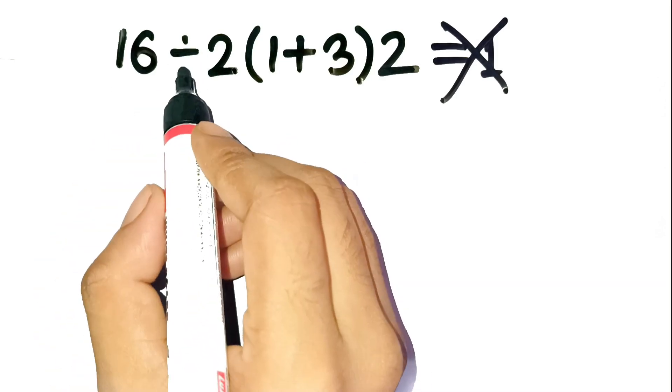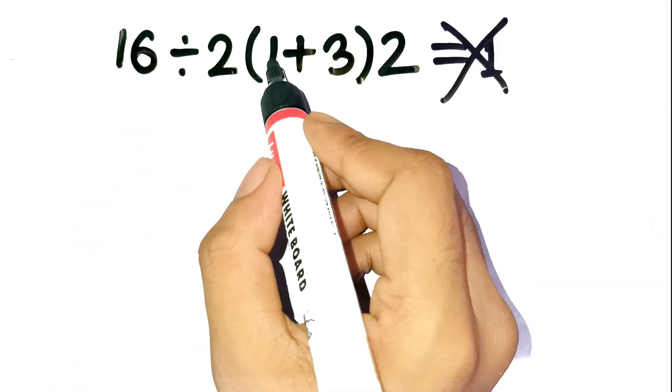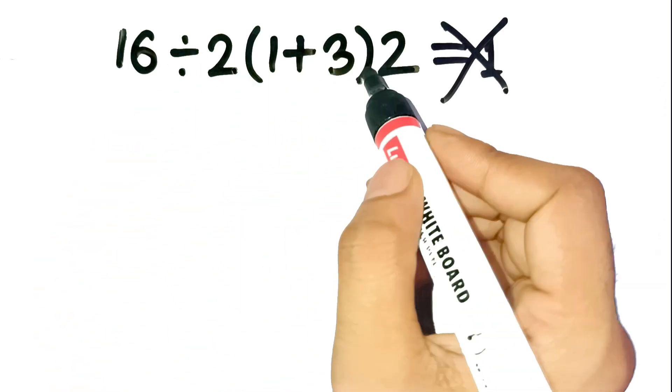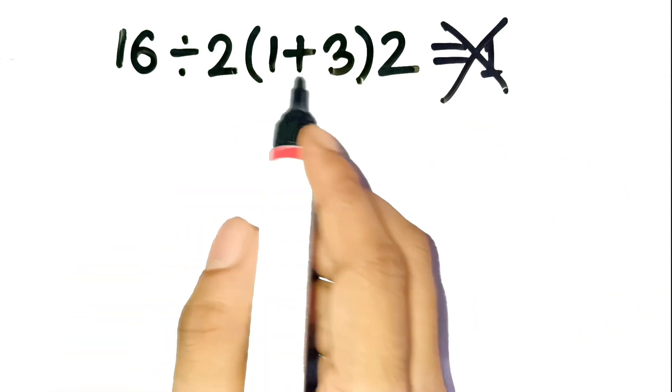The problem says 16 divided by two, open parenthesis, one plus three, close parenthesis, two. And almost everyone rushes through it.